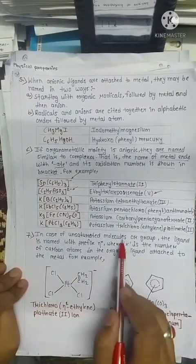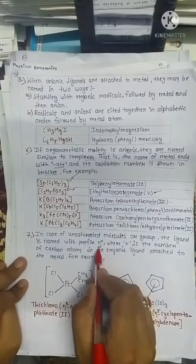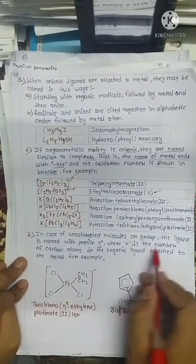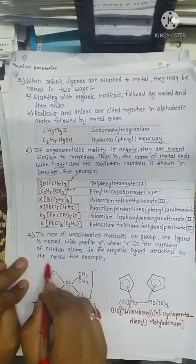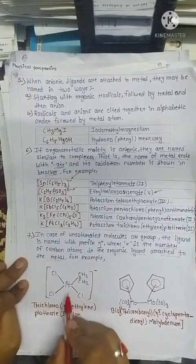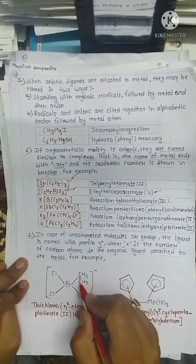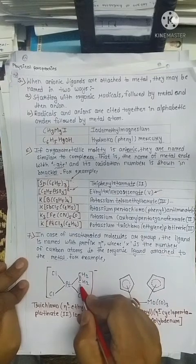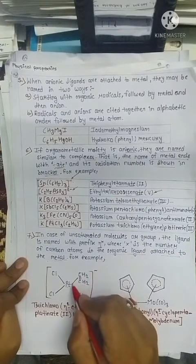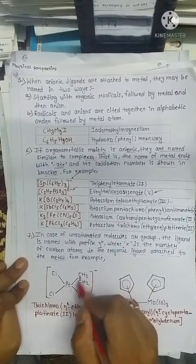Now, in the case of an unsaturated molecule or group, the ligand is named with the prefix η (eta) raised to the power x, where x is the number of carbon atoms in the organic ligand attached to the metal. Just see this case: this platinum molecule is attached to both carbon atoms because the bond shown is not on one specific carbon, but is present between the two double-bond carbons.